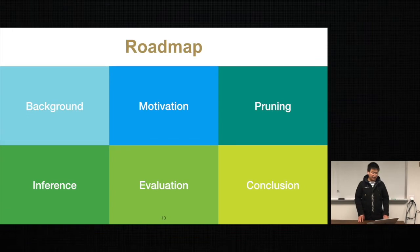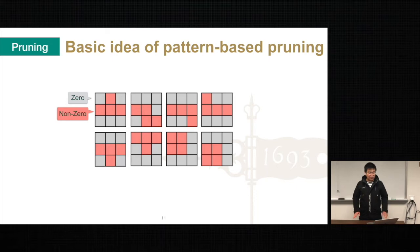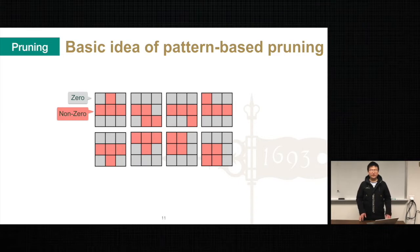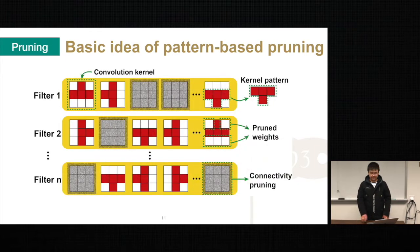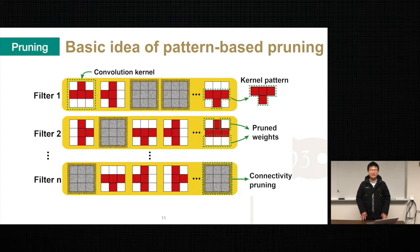Let's look at our first contribution. We call our pruning technique pattern-based pruning because we set several fixed patterns during weight pruning. Here are some sample patterns for a 3x3 convolutional kernel. At the beginning, a kernel consists of 3x3, which is 9 elements. After pruning, each kernel will have four non-zeros in a certain pattern. Our pattern-based pruning has two dimensions: one is intra-convolutional kernel pattern pruning, and another is inter-convolutional kernel connectivity pruning. To get pattern sparsity, we prune a fixed number of weights in each convolutional kernel. To get connectivity sparsity, we cut relatively unimportant connections between certain input and output channels, which is equivalent to the removal of corresponding kernels.